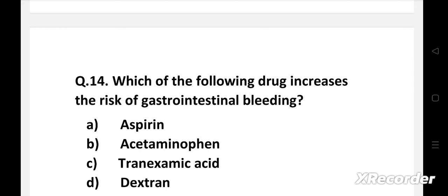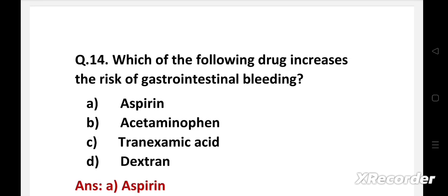Next question. Which of the following drug increases the risk of gastrointestinal bleeding? Option A: Aspirin. B: Acetaminophen. C: Tranexamic acid. D: Dextran. Right answer is option A: Aspirin. Aspirin use increased serious GI bleeding by 60 percent with a larger effect on upper GI bleeding.